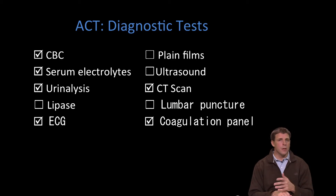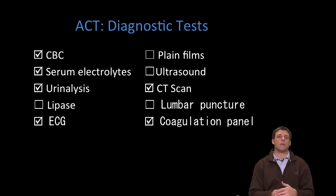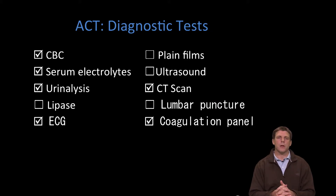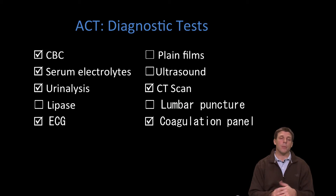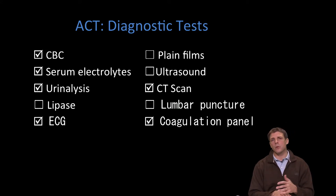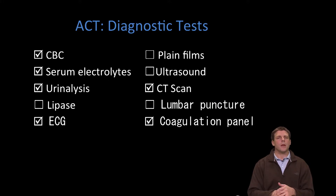Urinalysis is important because even a urinary tract infection can frequently manifest with depressed level of consciousness, confusion, and neurologic signs. An electrocardiogram is important because many patients with stroke — both ischemic and hemorrhagic — will manifest cardiac arrhythmia and instability. Of critical importance is a CT scan, which will help us differentiate between hemorrhagic stroke and ischemic stroke.